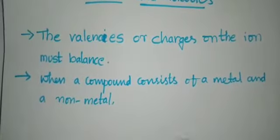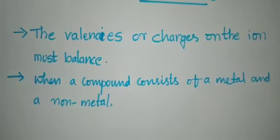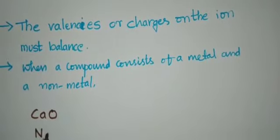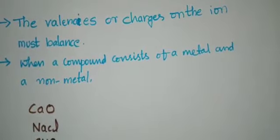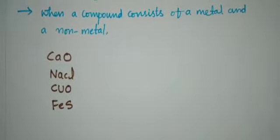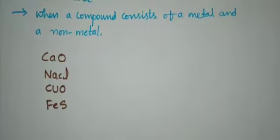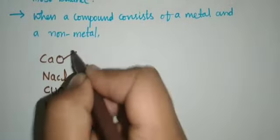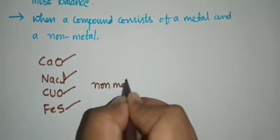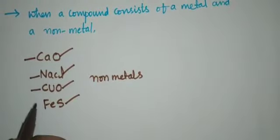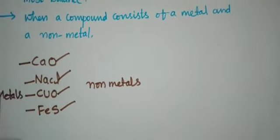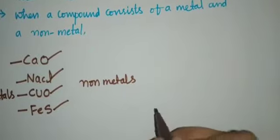When a compound consists of a metal and a non-metal, the name or symbol of the metal is written first. For example: calcium oxide, sodium chloride NaCl, copper oxide CuO, and iron sulfide FeS. Oxygen, chlorine, and sulfur are non-metals, while calcium, sodium, copper, and iron are all metals.